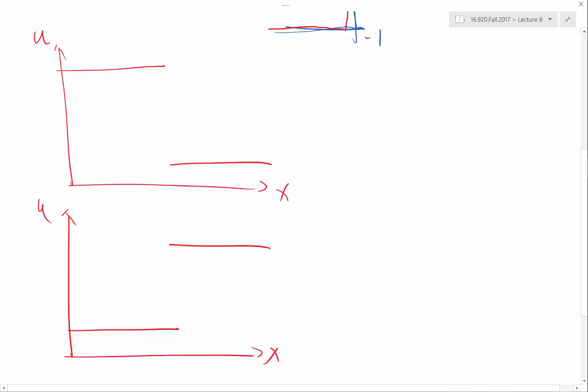For Burger's equation, df/du is an increasing function as u increases. So which side has a faster characteristic, left or right in the upper case? The left is going to have faster characteristics, and the right is going to have slower. That means is the shock wave going to dissipate or is it going to be maintained? It's going to be maintained because the characteristic will bump into the shock wave.